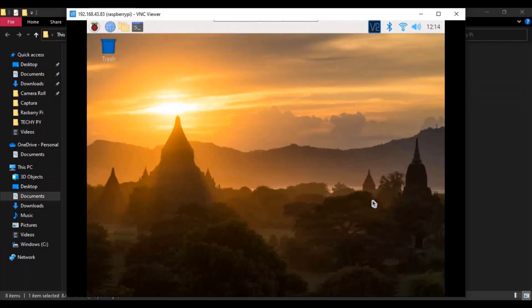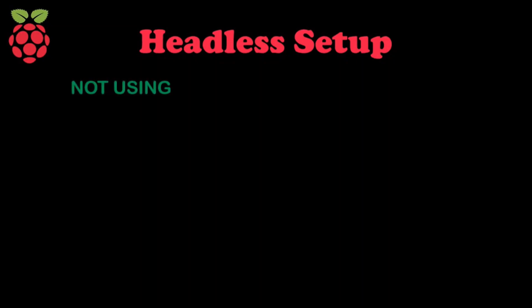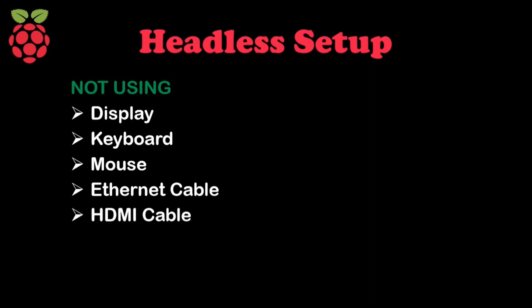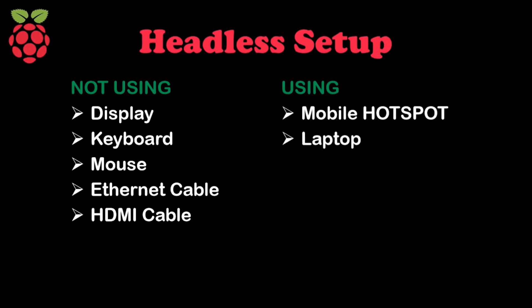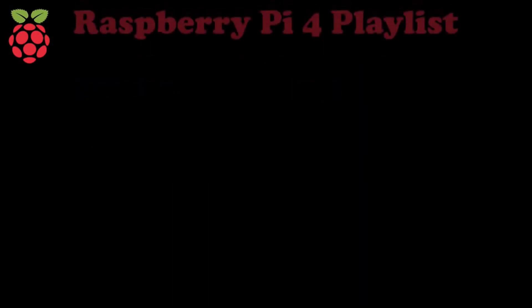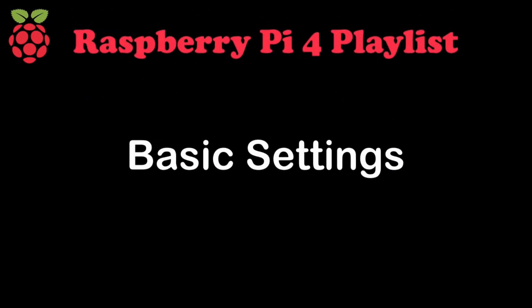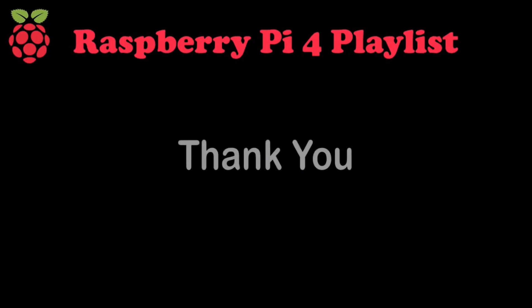You can see that our headless setup of Raspberry Pi 4 is completed successfully. In this headless setup I am not using any type of display, keyboard, mouse, Ethernet cable, or HDMI cable — I just did this setup using a mobile hotspot and a laptop. Now just follow these steps and do the headless setup with your Raspberry Pi. If you get any errors, share them with me and I'll definitely try to solve your problems. I'm excited to know your experience — share it in the comment box. In the next video I'll introduce you to some basic settings of the Raspberry Pi desktop, so stay with this playlist. Thank you so much for watching!